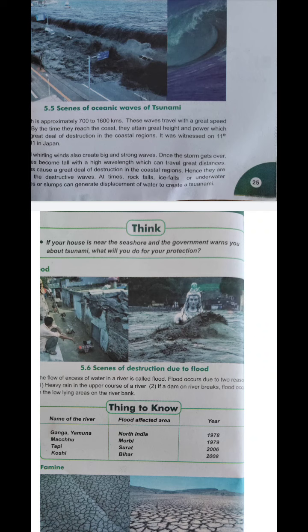Flood — small and old houses are damaged due to floods. The flow of excess water in a river is called a flood. When water levels rise excessively, flooding begins. Flood occurs due to two reasons: heavy rain in the upper course of a river, which causes the river to overflow, and if a dam on a river breaks, that also causes a flood.